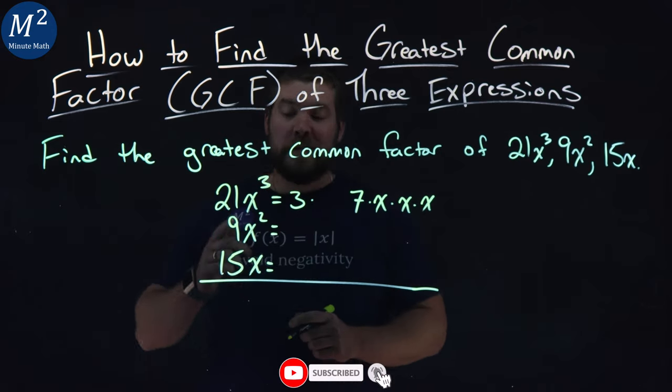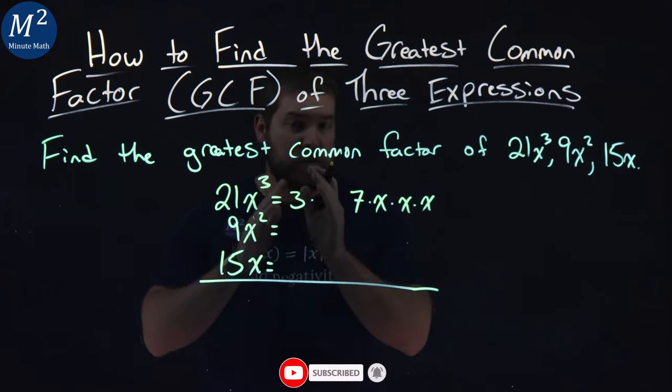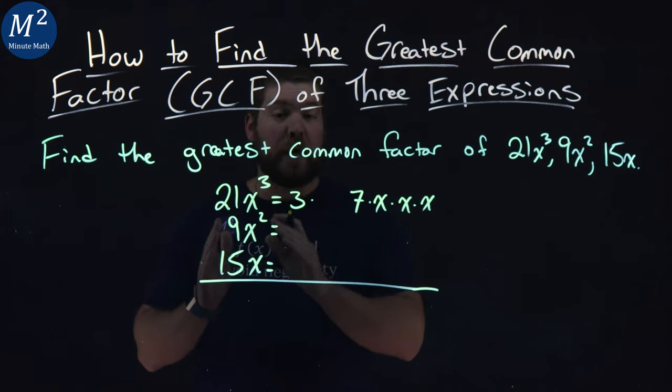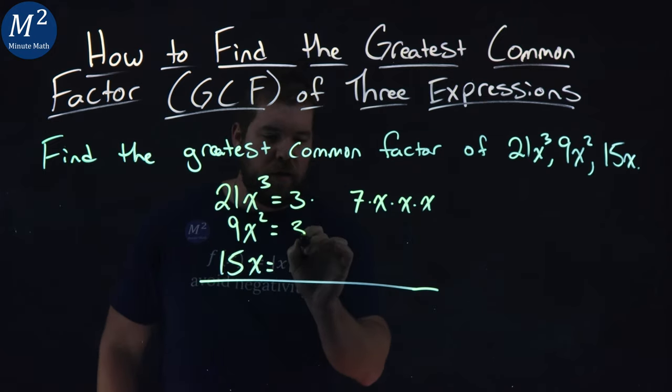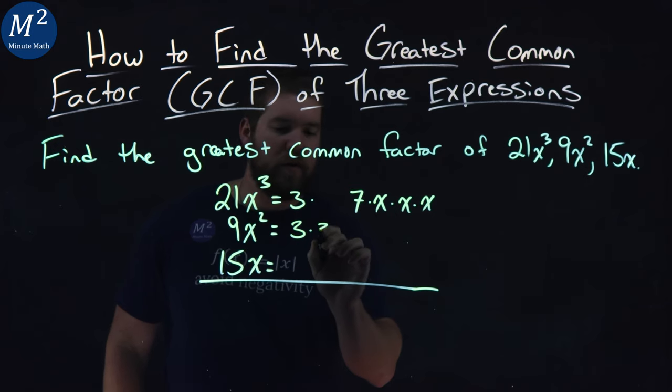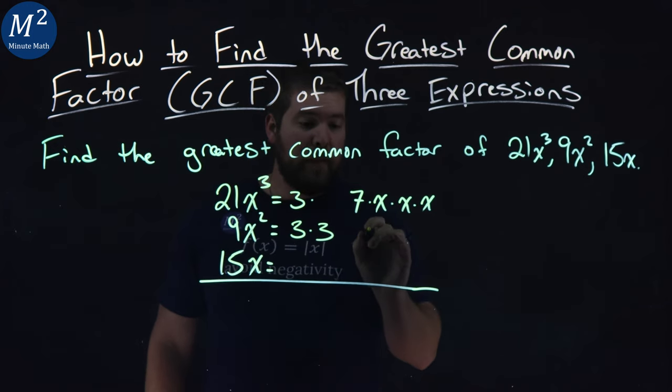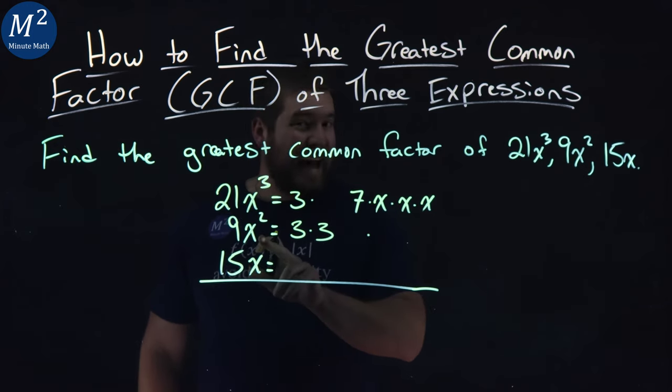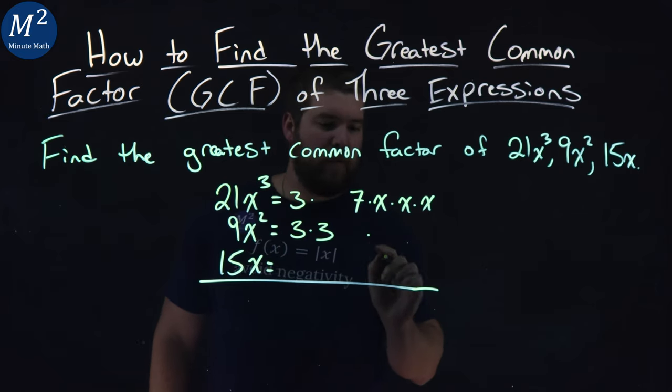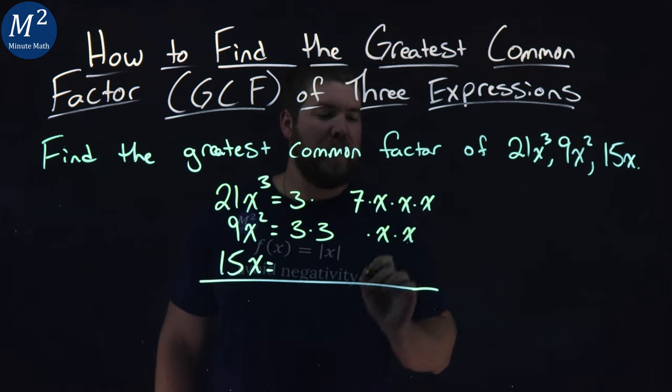The next one here is the 9, 9x squared. 9 itself breaks down to be 3 times 3. Put a 3 here, and then to the right I'll put another 3 as well. Then we get multiplied by two x's, x squared. I'll line that with the x's, x times x.